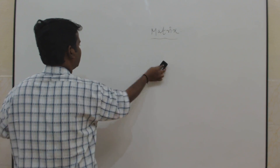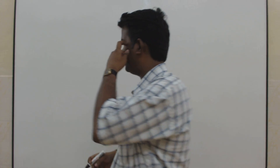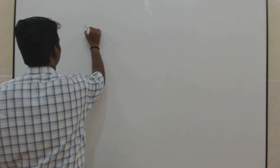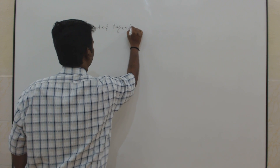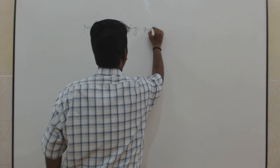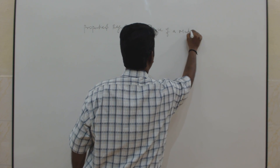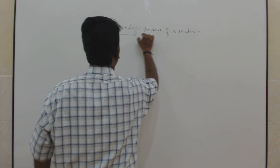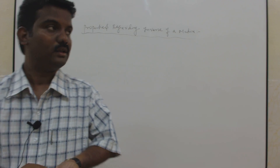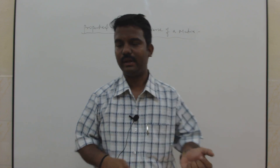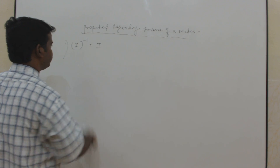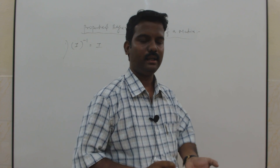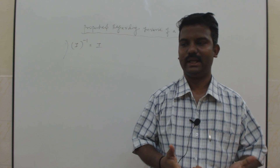Next we are going to discuss some properties regarding the inverse of a matrix. The first property is: I inverse is equal to I. In other words, the inverse of a unit matrix is always the unit matrix itself.